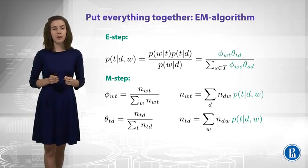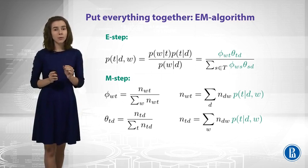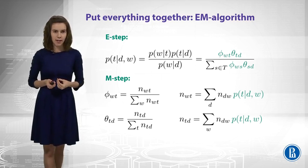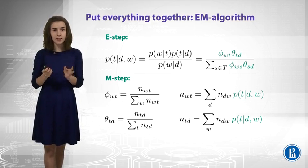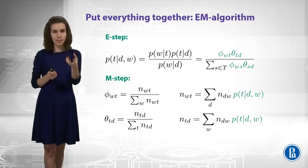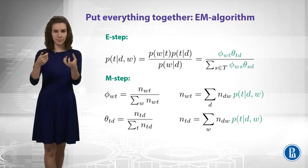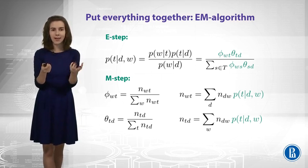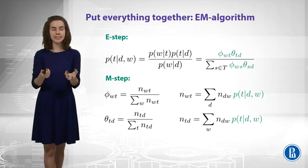M-step is about those updates for parameters. We have discussed it for the simple case, when we know the topic's assignment exactly. Now, we do not know them exactly. So it is a bit more complicated to compute n_wt counts. This is not just how many times the word is connected with this topic. But it's still doable. We just take the words, we take the counts of the words, and we weight them with the probabilities that we know from the E-step. And that's how we get some estimates for n_wt. This is not an integer counter anymore. It is some float variable that still has the same meaning, still has the same intuition.